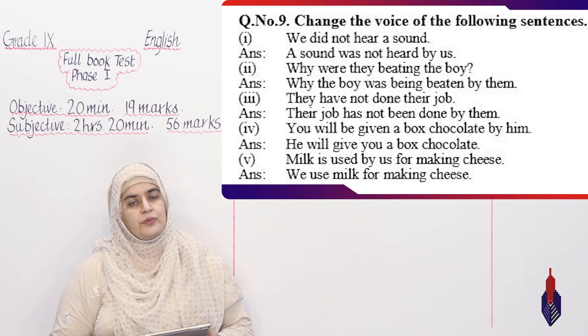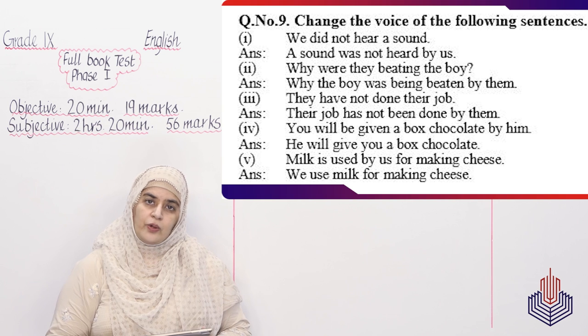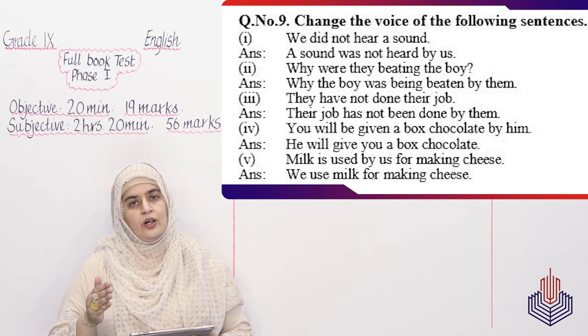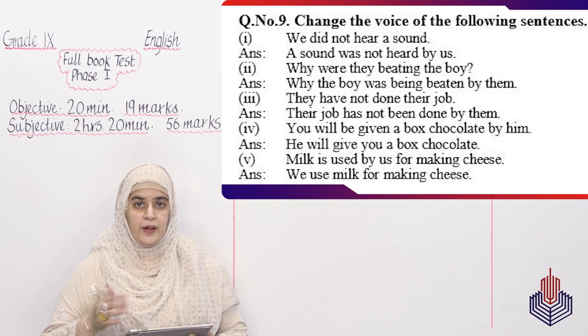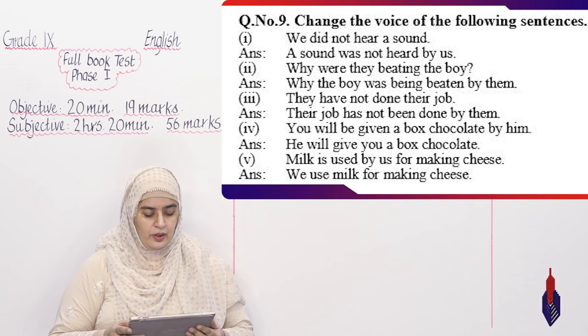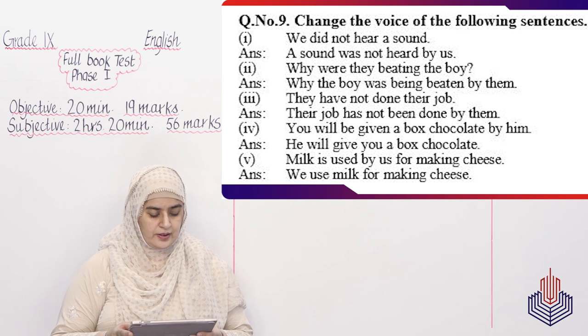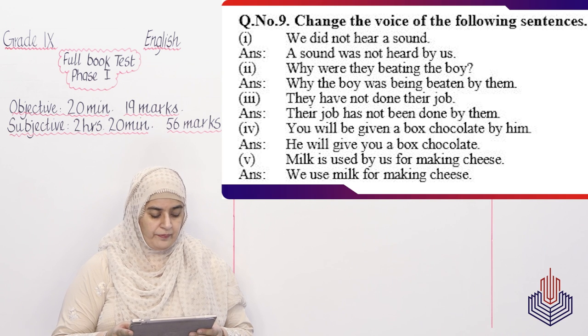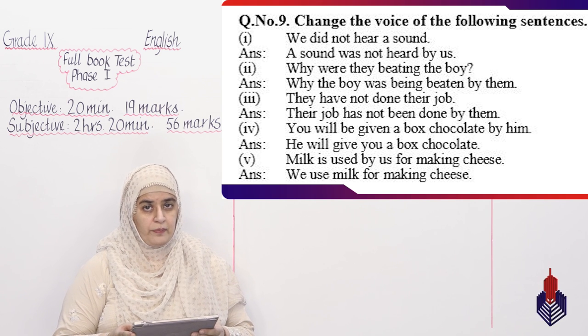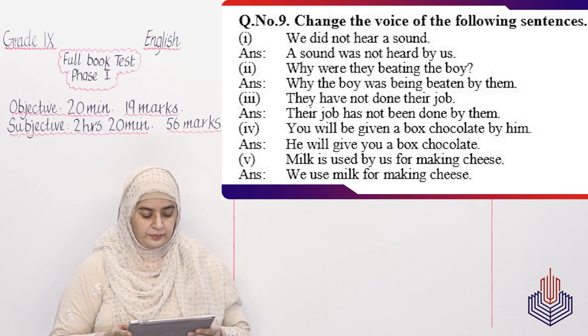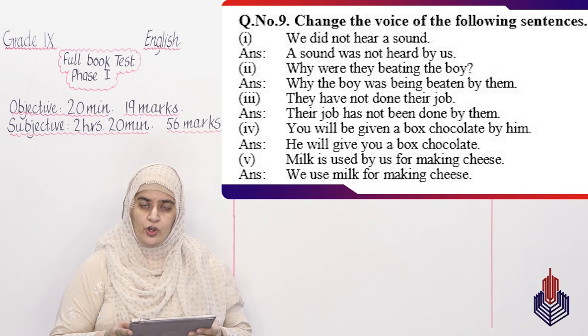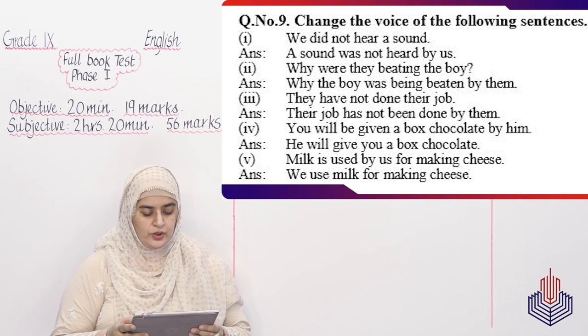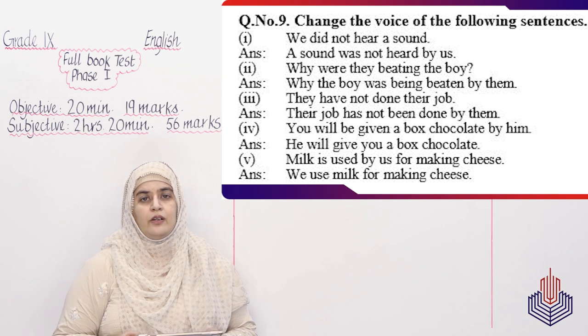Us ke baad aap ka aakhri sawaal aaj ki paper ka aap se keh raha hai ke given sentences ko aap ne correct voice mein turn karna hai. Active se passive mein ya passive se active mein turn karna hai aur aap ke paas marks hain 5. Number 1: We did not hear a sound. Answer: A sound was not heard by us. Number 2: Why were they beating the boy? And the answer is: Why was the boy being beaten by them? Number 3: They have not done their job. And the answer is: Their job has not been done by them. Number 4: You will be given a box of chocolates by him. And the answer is: He will give you a box of chocolates. Number 5: Milk is used by us for making cheese. And the answer is: We use milk for making cheese.